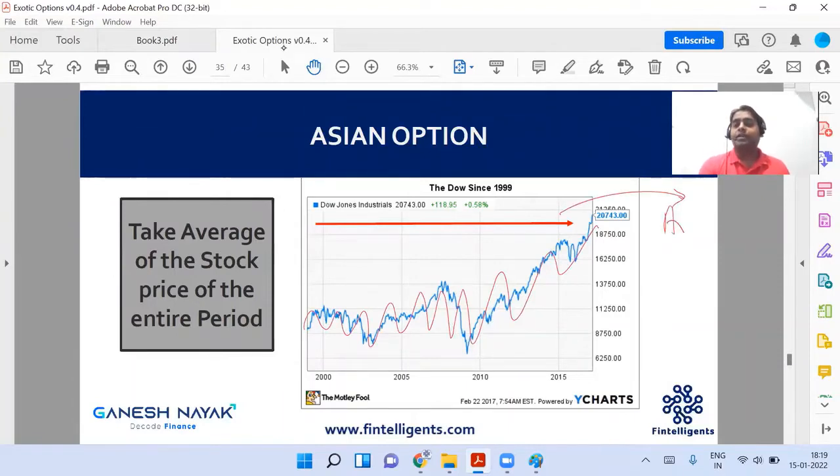You can calculate the average price of the underlying asset, right? And that you can use. Instead of maximum and minimum, you can use it now.